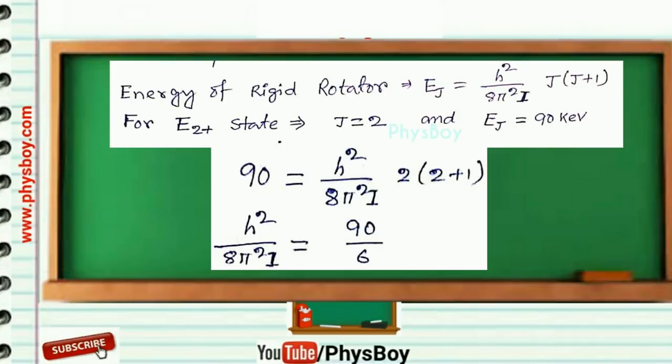So from this energy expression we can write 90 = h²/(8π²I) times 2(2+1), where 2 is the value of j. So we get the value of h²/(8π²I) = 90/6.